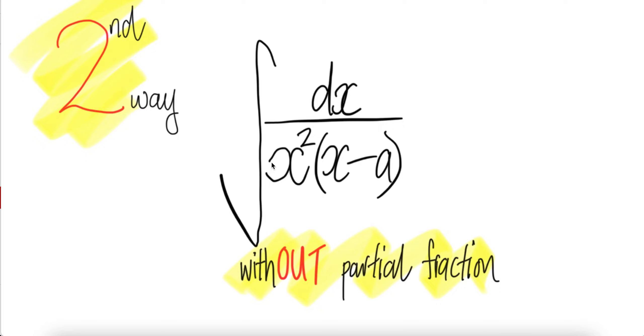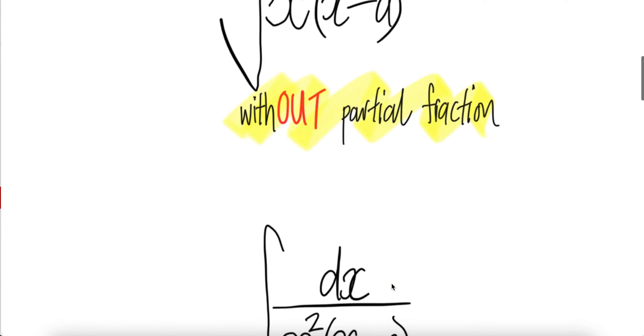Integral of 1 over x squared times (x minus a), where a is a constant. We're going to do this using a second way, without partial fractions.